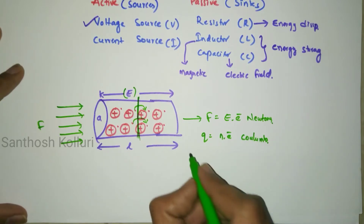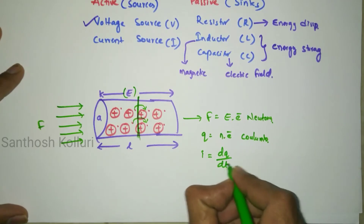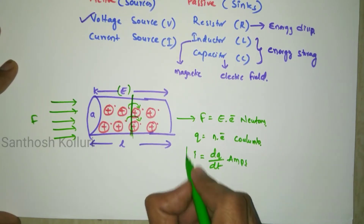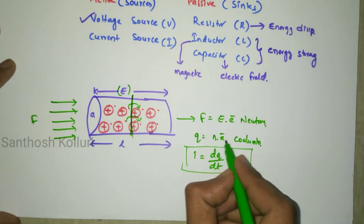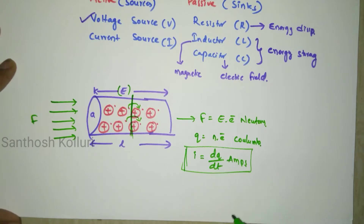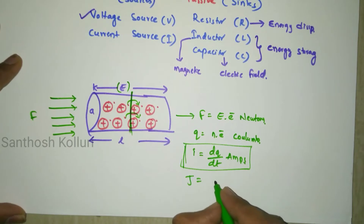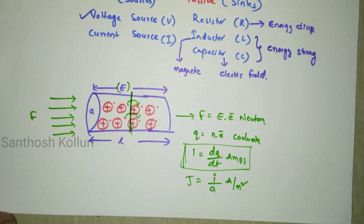The current can be written as the rate of change of charge with respect to time: I is equal to dQ by dt amperes. The current density J can be written as current per unit area, so J is equal to I by A, in amperes per meter square.